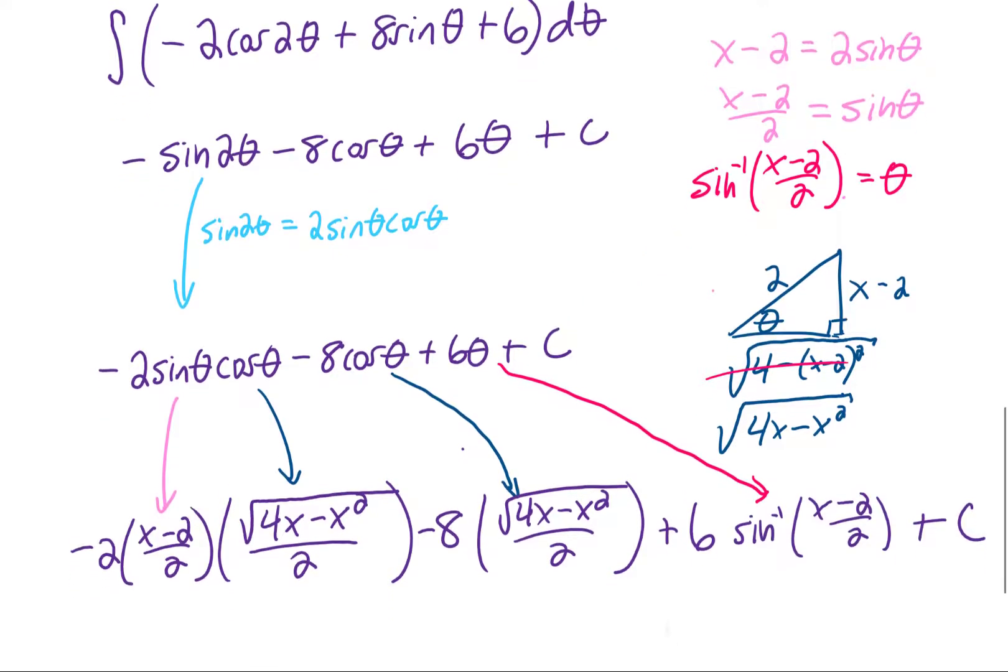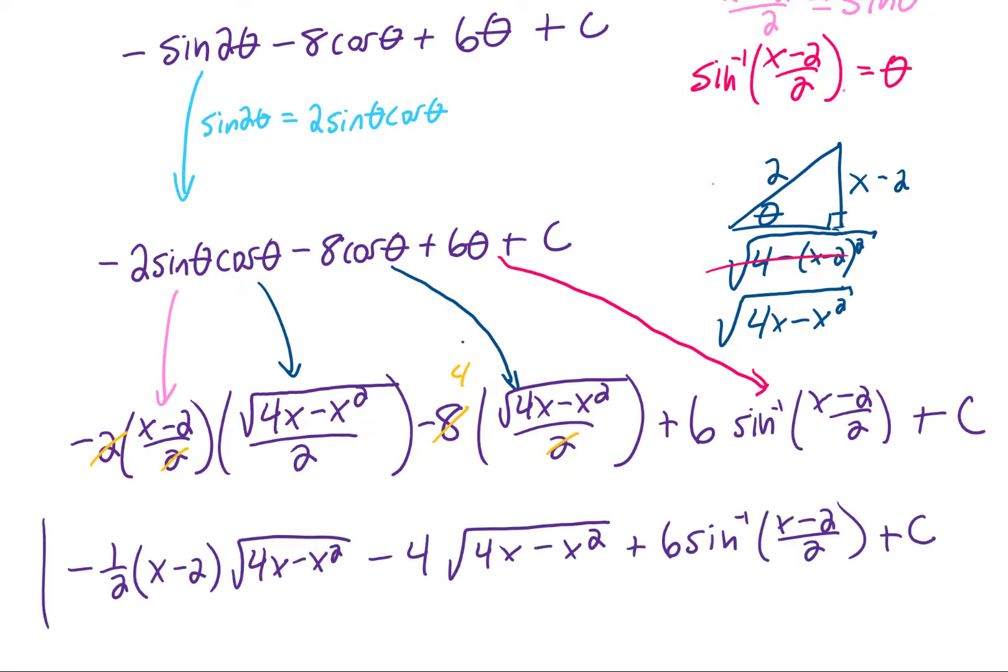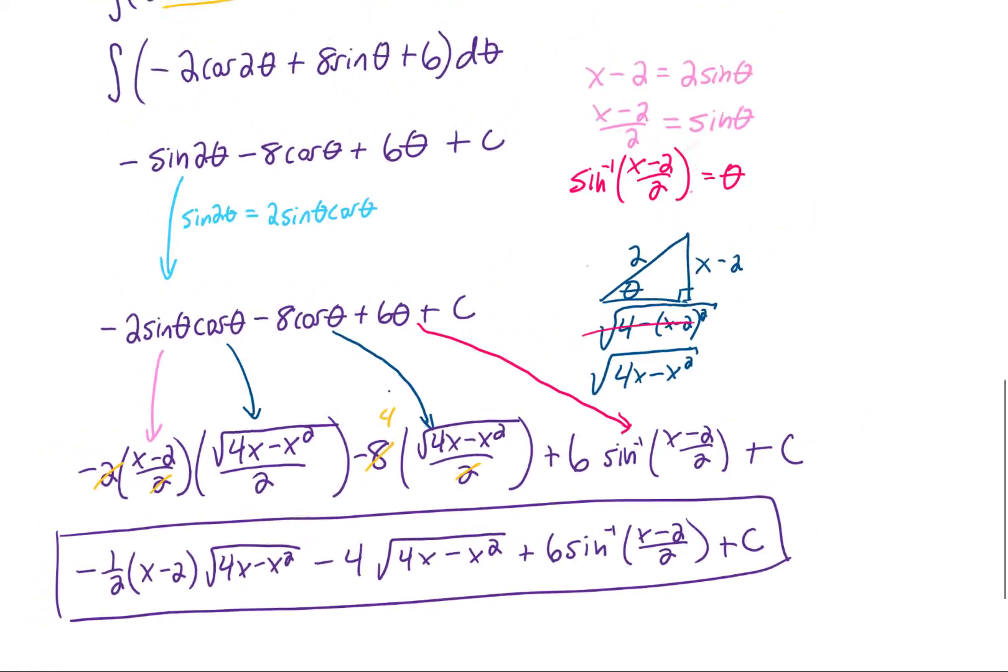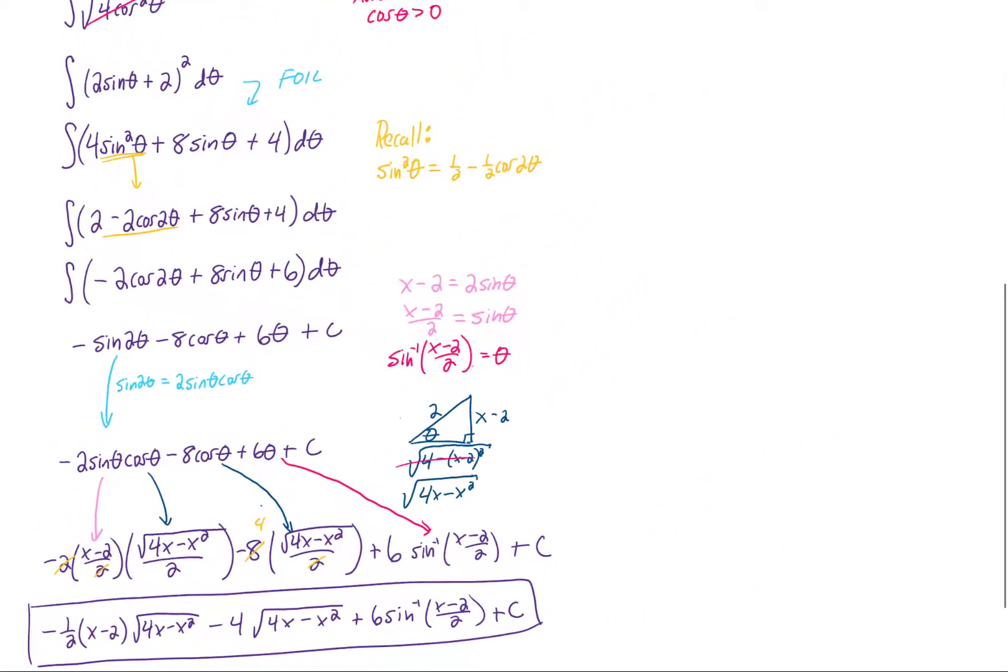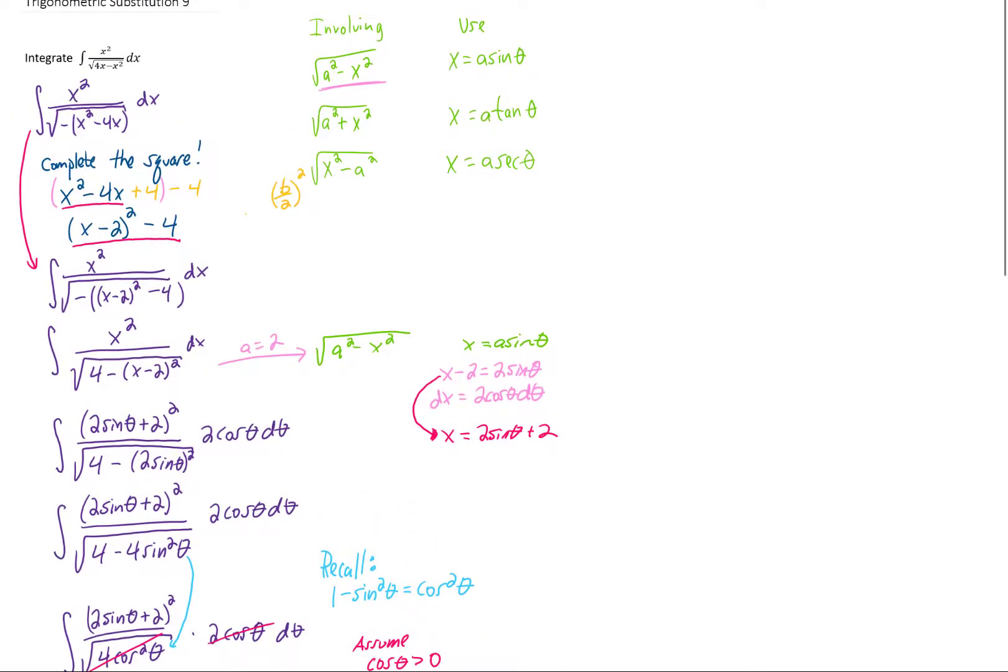And we have ourselves a pretty good final answer, though it might make sense to simplify this just a little bit. Let's cancel our 2s. Let's cancel this 8 with this 2, and let's neaten things up a little bit. All right, that looks pretty good. These trig sub problems are pretty long, but that was a good one. Let me zoom out, and I will scroll through the work so that you can take another look and hit pause whenever you feel like it's necessary.